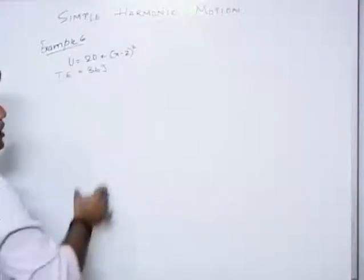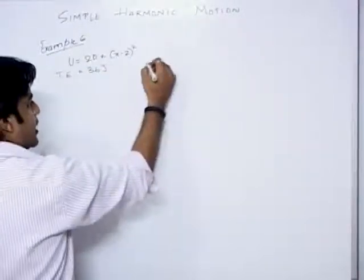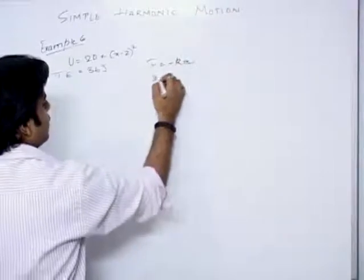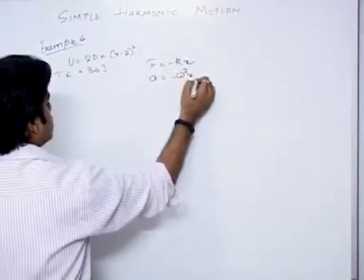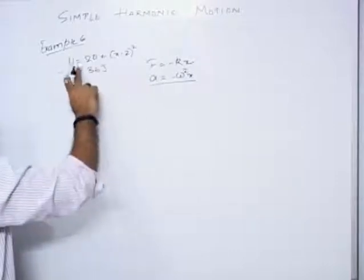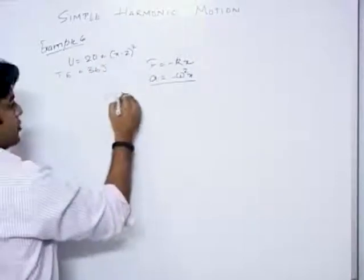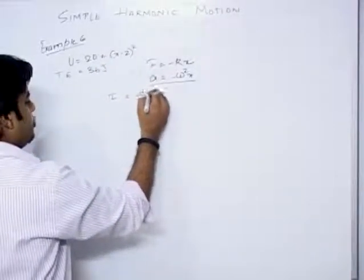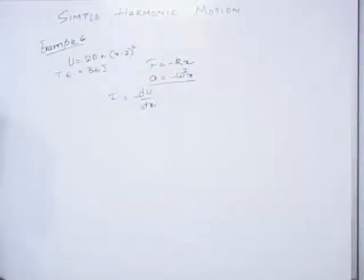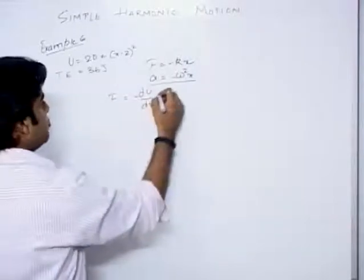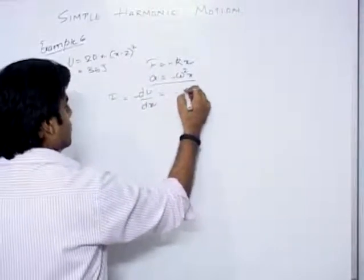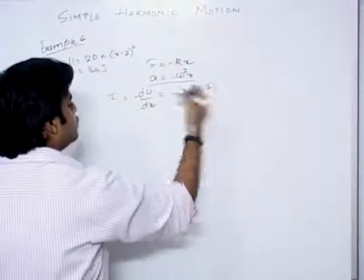What is the first condition for SHM? F should be equal to minus k into x, or acceleration equals minus omega squared into x. This is the condition. We use the formula F equal to minus dU by dx. So the force will be minus 2 into (x minus 2).